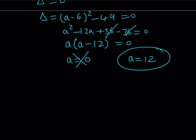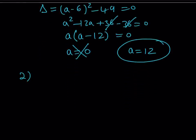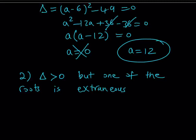But that's not the only case. There's a second scenario: the quadratic has two solutions, but one of them is extraneous. When solving logarithmic equations, especially after applying the power rule and squaring, extra solutions can be introduced that don't satisfy the original equation. So in case 2, we want delta > 0 — two solutions — but one root is extraneous and doesn't work in the original problem.